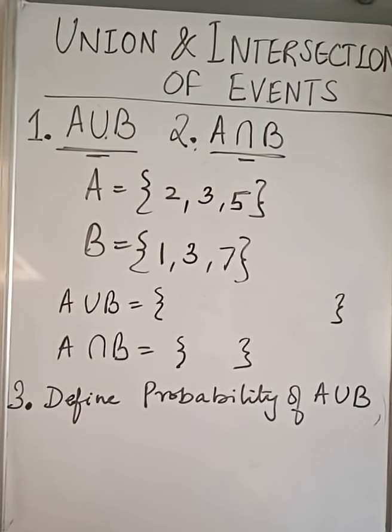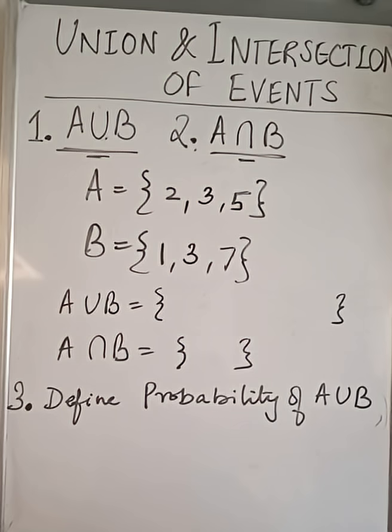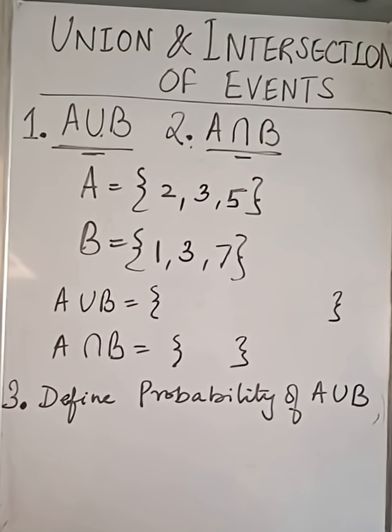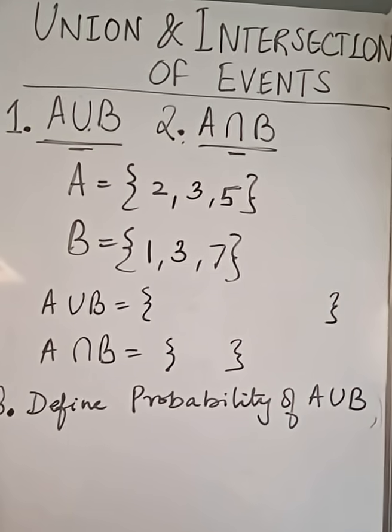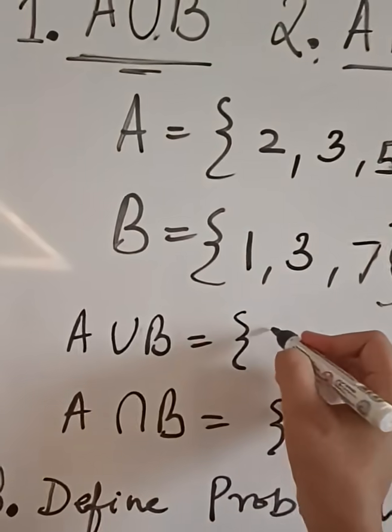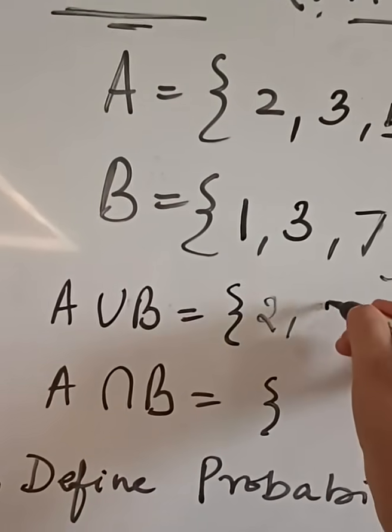A contains three elements 2, 3 and 5. B contains three elements 1, 3 and 7. A union B can be defined as all the elements from A,